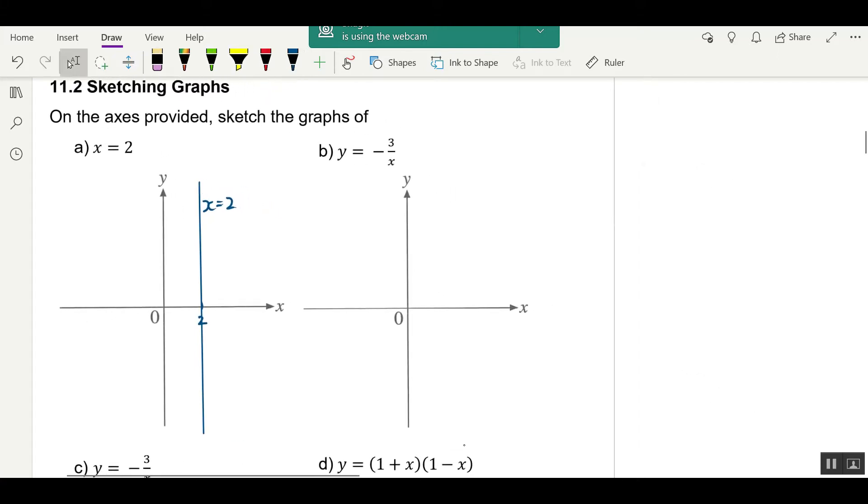Next, y equals to negative 3 over x. Think 3 over x. How does 3 over x look like? In your mind, you must have this visualization. It is here and it is here. So this is the graph of y equals to A over x.